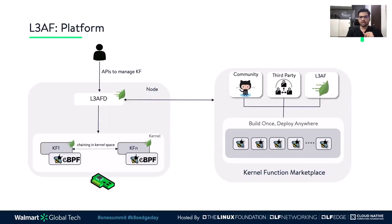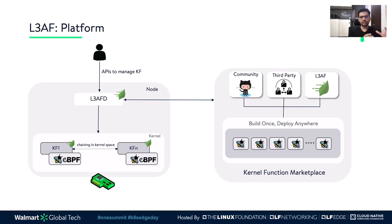As you can see, eBPF programs can be community developed, third-party vendor ones, or ones that the Walmart LEAF team has developed. We have a LEAF build engine which pulls the kernel functions, compiles them, and pushes the bytecode to an artifact management solution. When a user wants to deploy a kernel function, they call a LeafD API to provide configuration data. Once LeafD reads this new config, it orchestrates the kernel function on that Linux host as per the defined parameters.